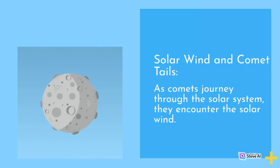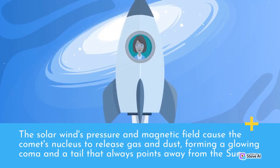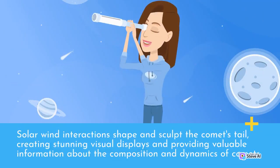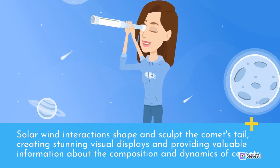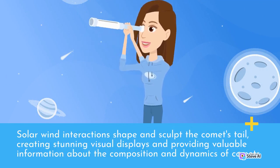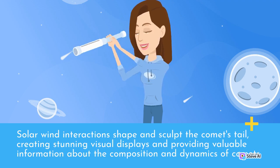Solar Wind and Comet Tails. As comets journey through the solar system, they encounter the solar wind. The solar wind's pressure and magnetic field cause the comet's nucleus to release gas and dust, forming a glowing coma and a tail that always points away from the sun. Solar wind interactions shape and sculpt the comet's tail, creating stunning visual displays and providing valuable information about the composition and dynamics of comets.